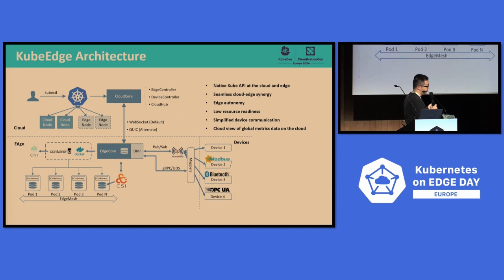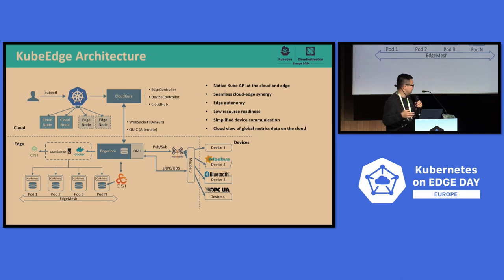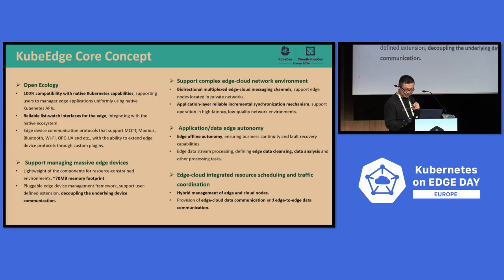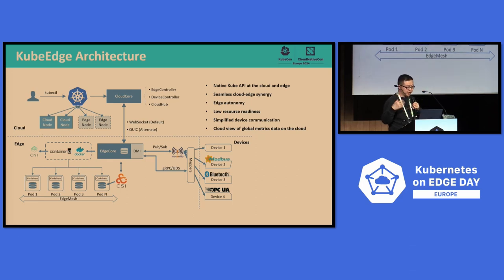Another part is the edge part, which also includes two parts. The left side is the application EdgeCore — it's a lightweight core component. We have done some trimming of the core component. The right part is the IoT device management part. We have also done some work to manage edge devices. The footprint of the EdgeCore is about 70 MB, so it can run on many lightweight devices.